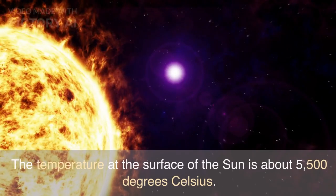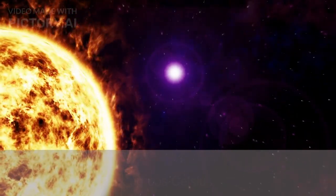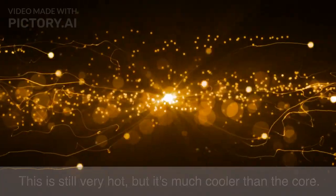The Sun's surface is much cooler than its core. The temperature at the surface of the Sun is about 5,500 degrees Celsius. This is still very hot, but it's much cooler than the core.